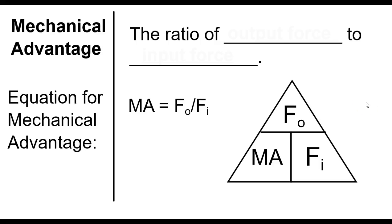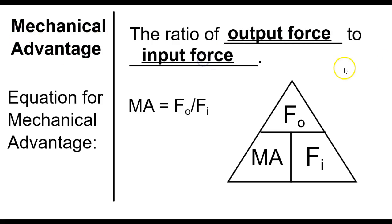This is Mrs. Winstead and this is number three of a four-part video series on the formulas for work, power, and simple machines. Today we're taking a look at mechanical advantage, which is the ratio of output force to input force. The way we calculate that is force output divided by force input.